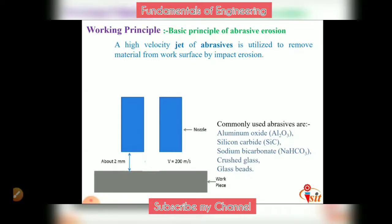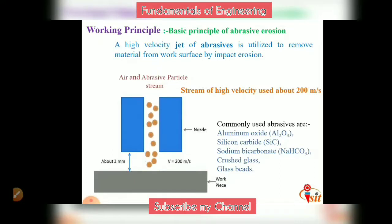As you can see in this picture, if you want to produce any cavity on the workpiece, an air plus abrasive particle stream is passed from the nozzle. This stream has a velocity of about 200 meters per second. It is passed from the top of the nozzle and impacts with high velocity on the workpiece surface, producing the cavity.